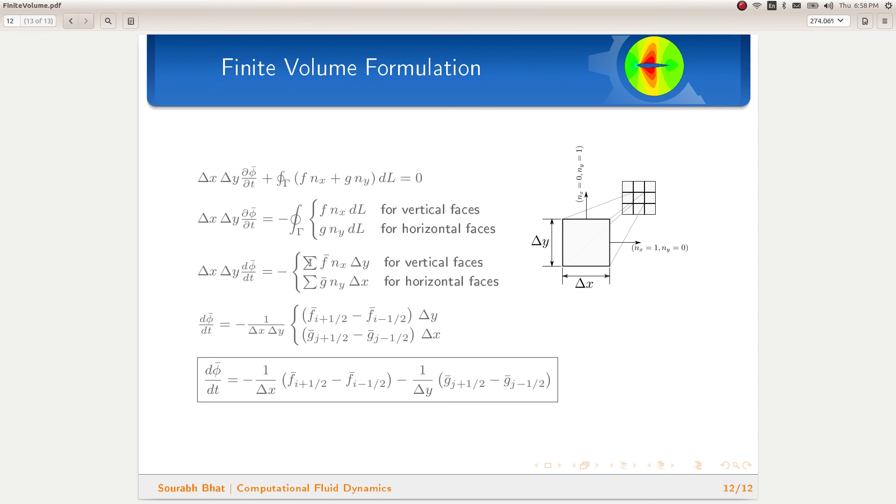Simplifying this further by using the average values of flux over the faces, we can get rid of the integral as well. Let us call the right hand side face as i plus half, the left hand side face as i minus half, the top face as j plus half and the bottom face as j minus half.